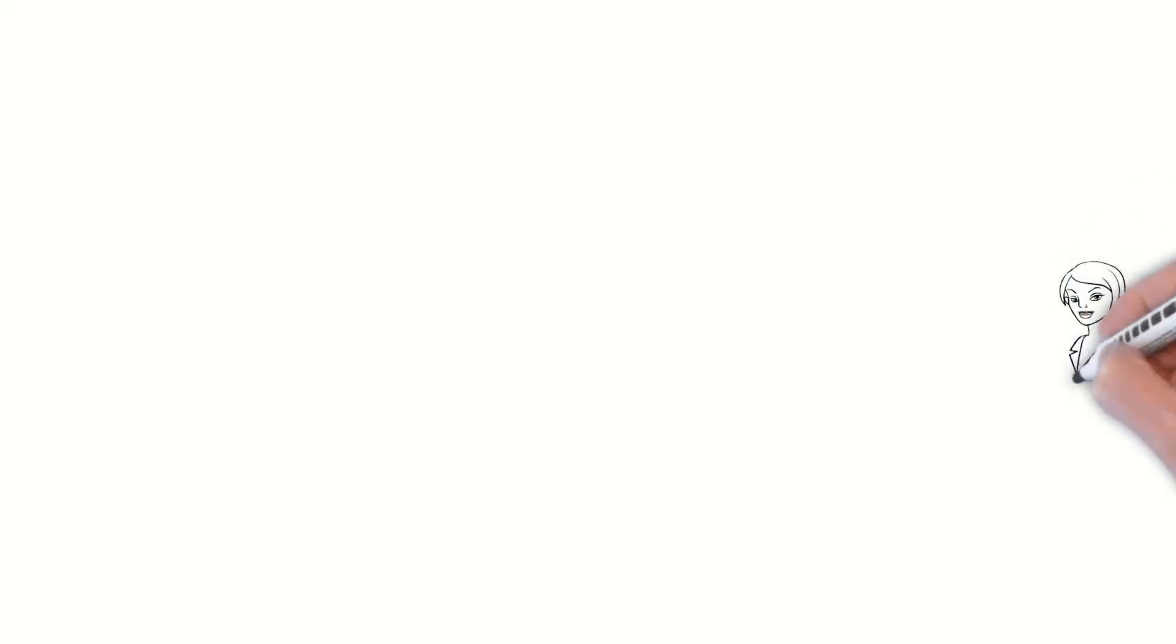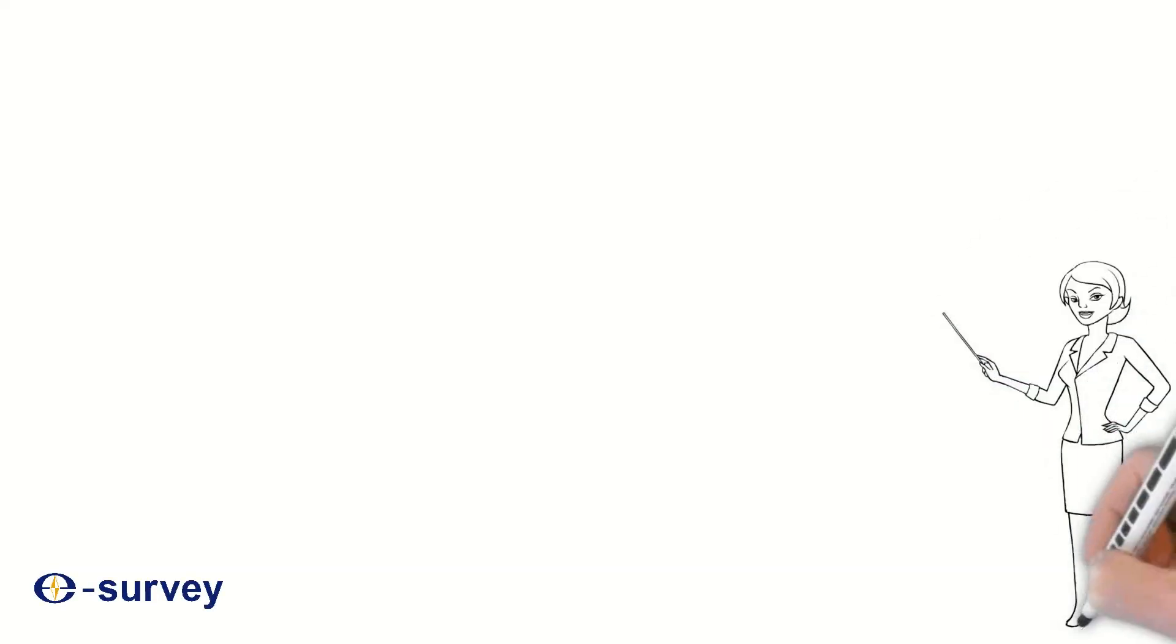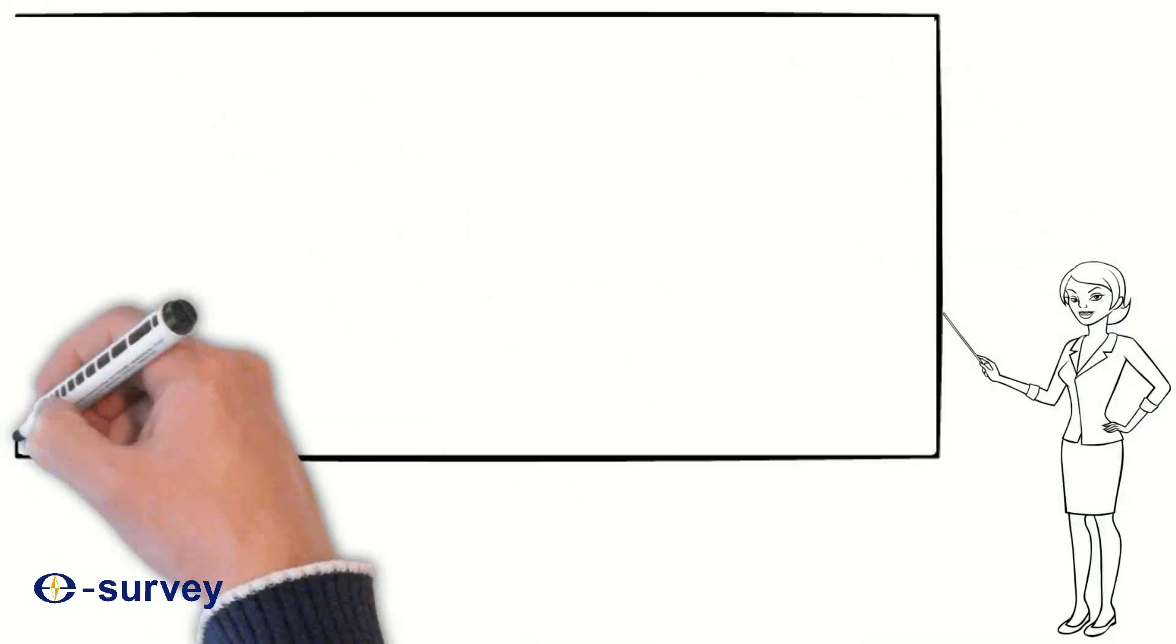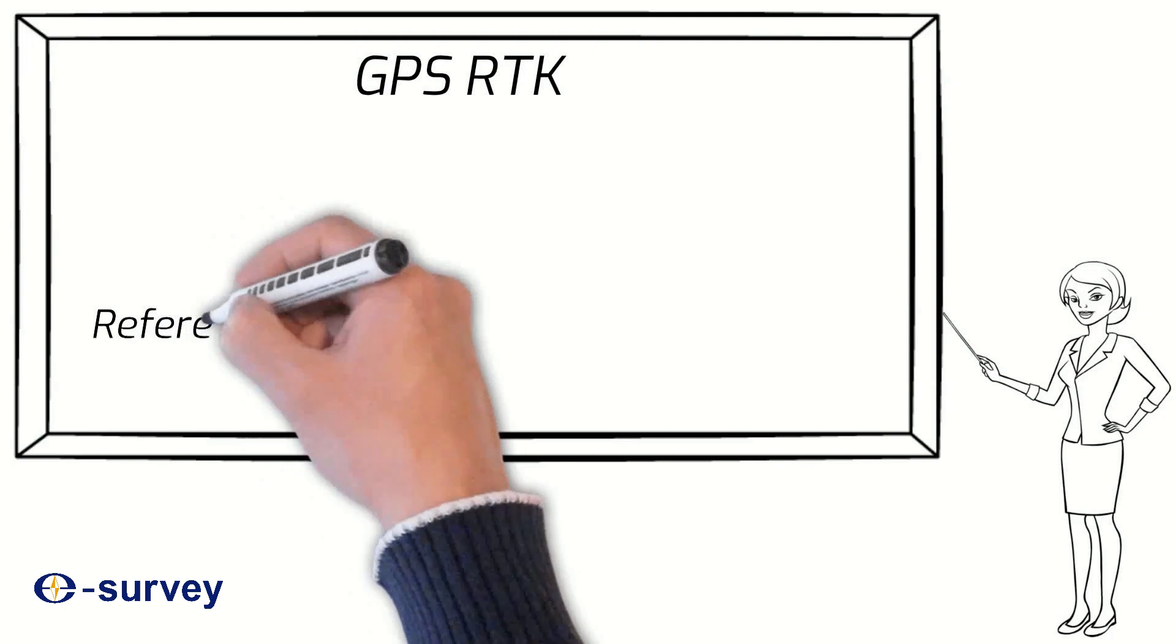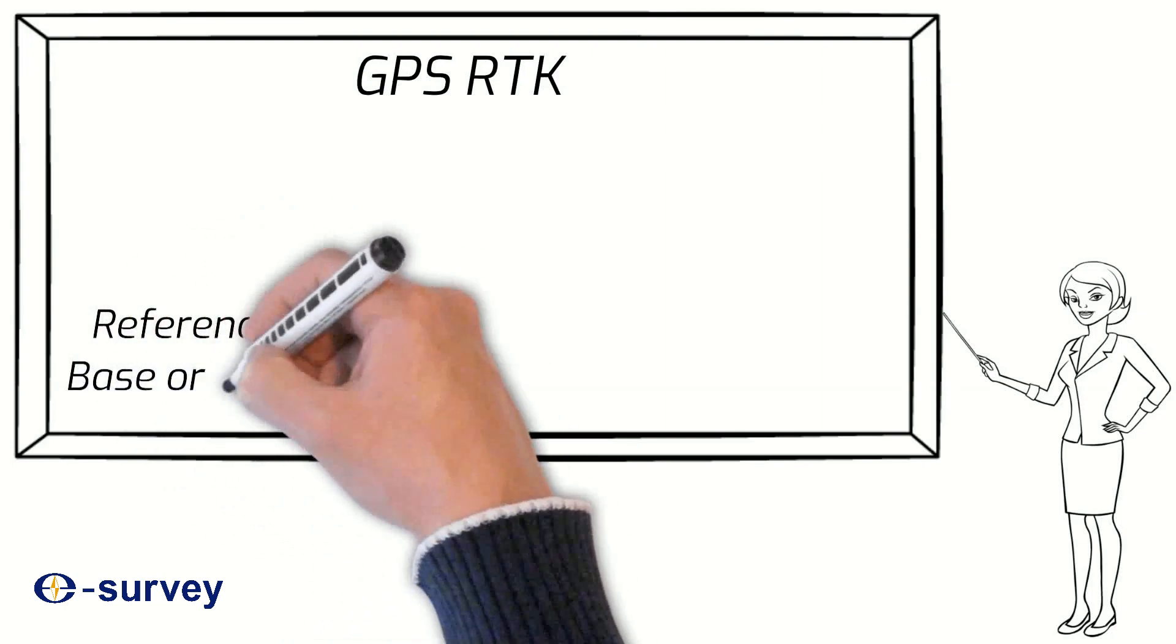When I was a student in university, one of the subjects we studied was RTK systems and GPS. Our instructor said the most important part of the RTK system is the references, which is the base or CORS station.